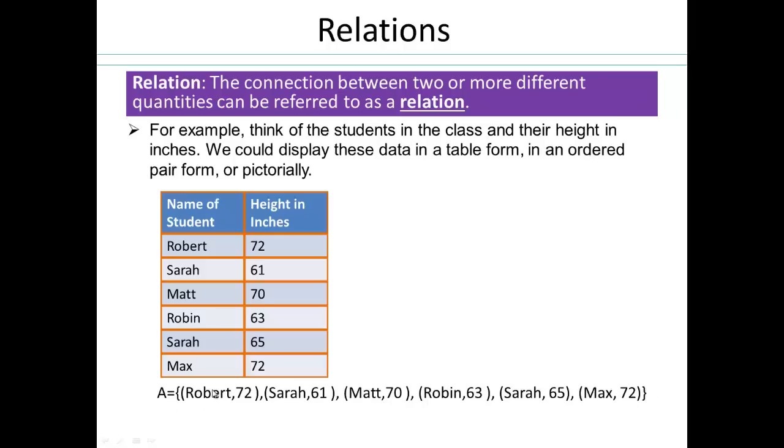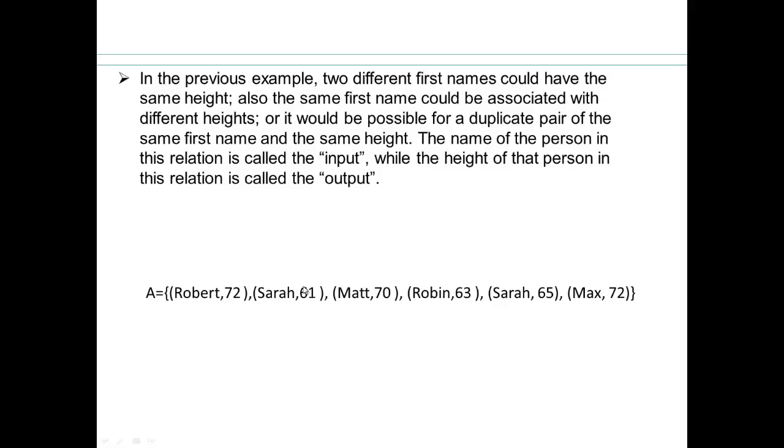It means that when the input is Robert, height is 72. When the input is Matt, height is 70. So first name Sarah, there are two people with that first name. And one of them is 61 inches tall, the other one is 65 inches tall. So we're saying that the same first name could be associated with different heights. We can also have that two people have different first names, but same height. So Max has 72 inches height, and Robert has 72 inches height.